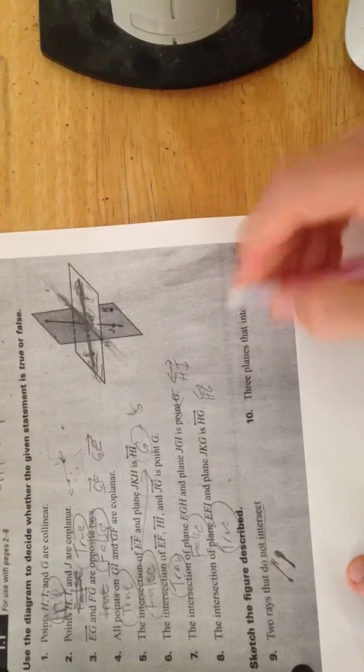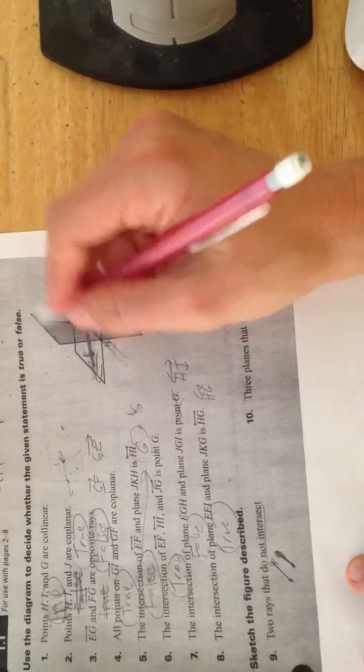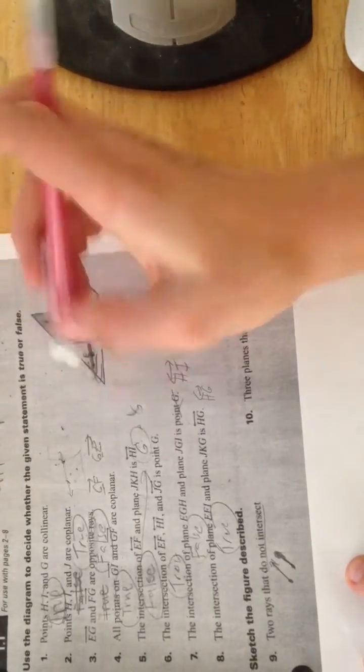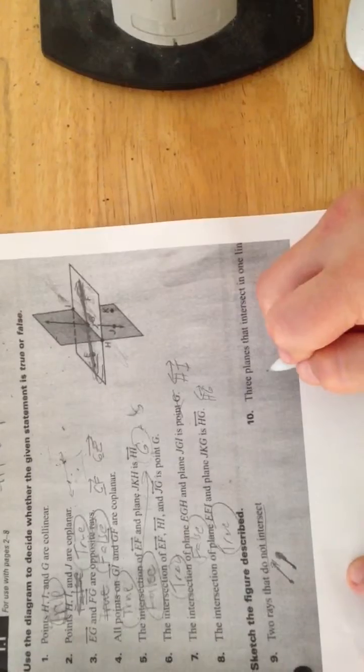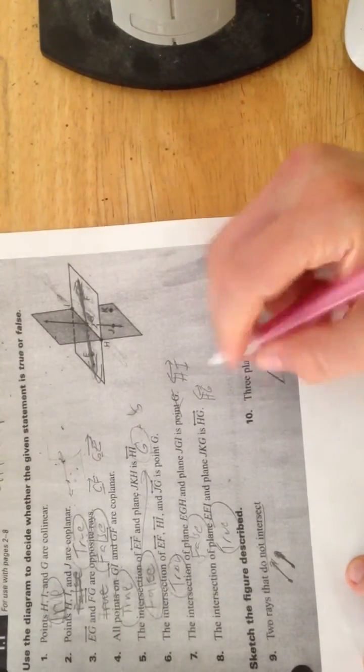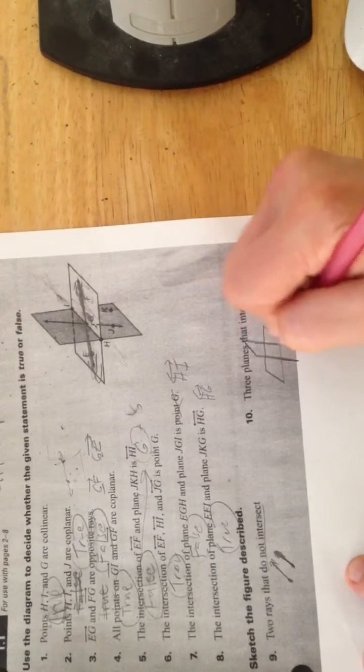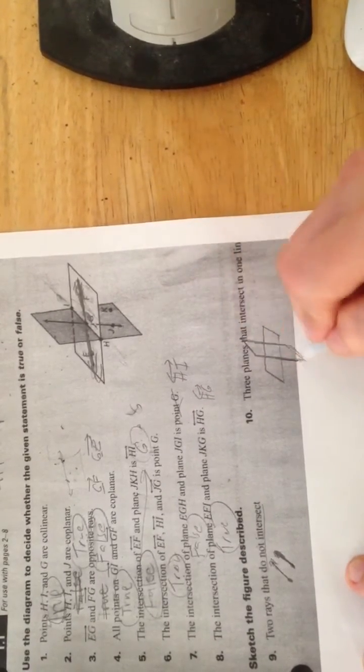Three planes that intersect in one line, so it could start off with these two planes here, so do your best to draw those two planes there, I guess I'll try it. Draw little parallelograms to try to show the dimensions, and then draw another little parallelogram there, just show those two planes.